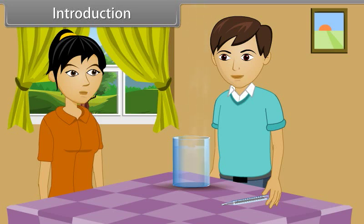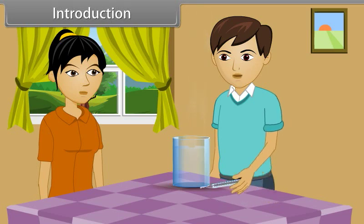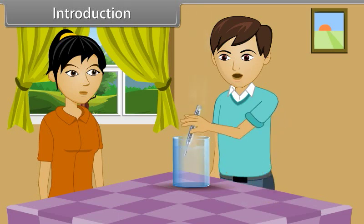We are going to measure the temperature of a liquid. We need just one flask of hot water and one thermometer. Firstly, we dip the thermometer into the glass. Then, we measure the exact temperature of water. Brother, how does this thermometer work?